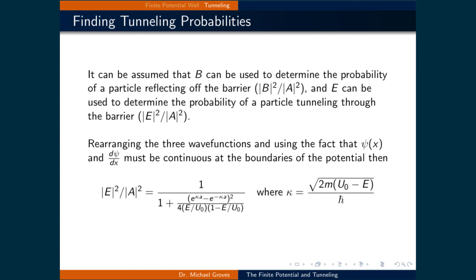Therefore, to calculate the tunneling probability, we divide |E|² by |A|². The result, found by applying boundary conditions where the wave function and its derivative must be continuous at the boundaries, is: T = 1 / [1 + (κa e^(κa) − e^(−κa))² / (4(E/U₀)(1 − E/U₀))], where κ = √(2m(U₀ − E)) / ℏ.